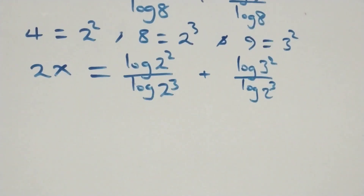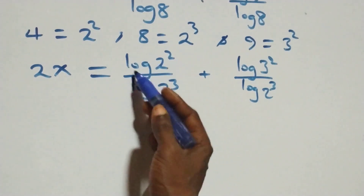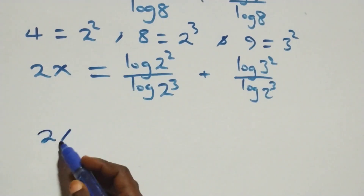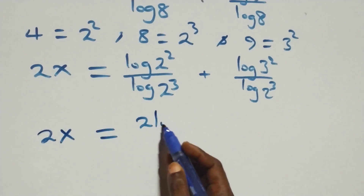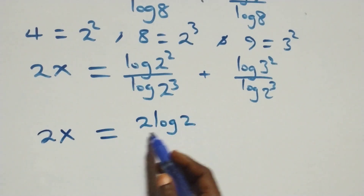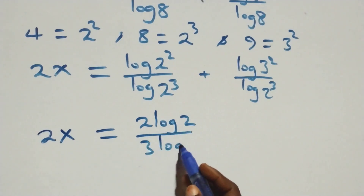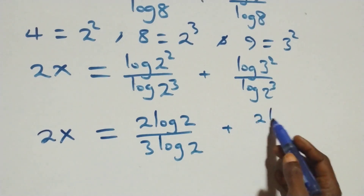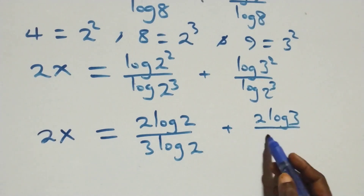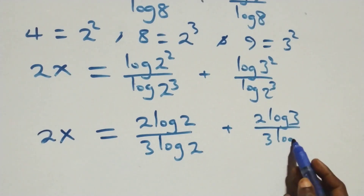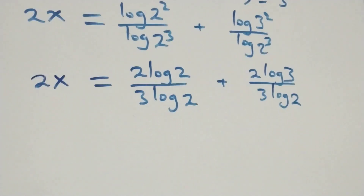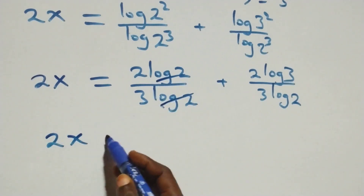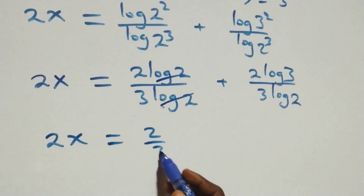Applying the power of logarithm rule, the exponents come down: 2x equals 2 log 2 over 3 log 2 plus 2 log 3 over 3 log 2. Log 2 cancels each other in the first fraction, and we have 2 over 3 left, so 2x equals 2/3 plus 2 log 3 over 3 log 2.